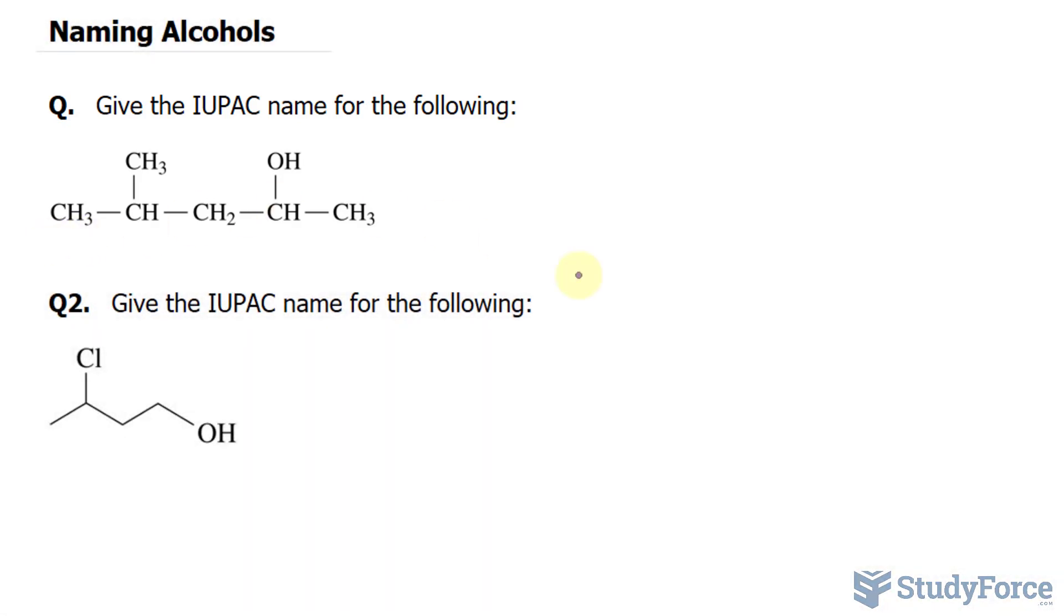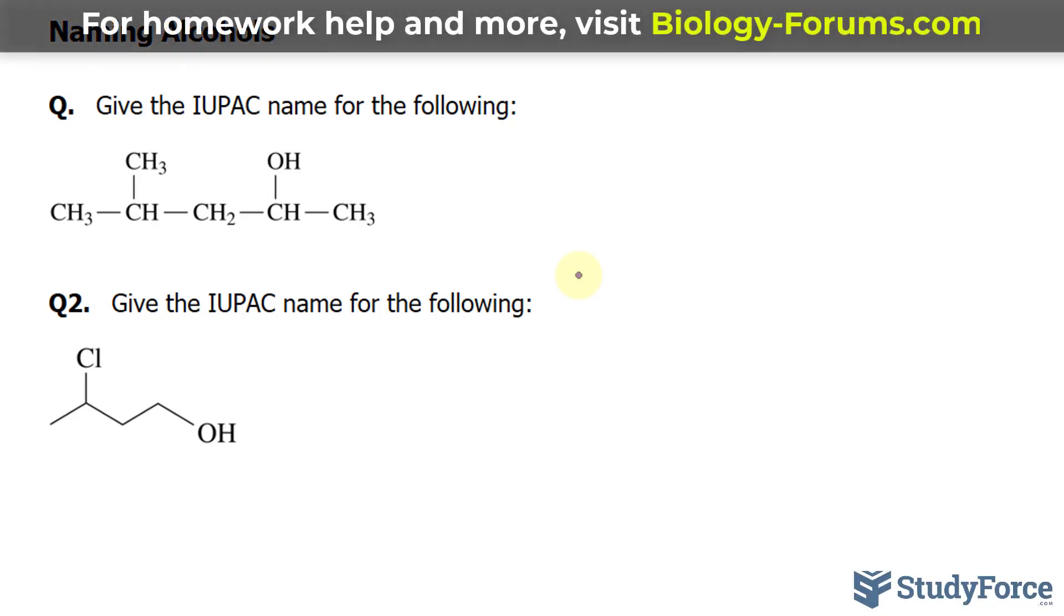So we want to find the longest chain of carbons. We have one, two, three, four, five, that's the longest, and you want the longest chain of carbons to contain the OH.